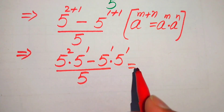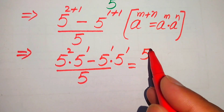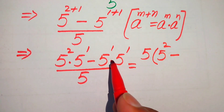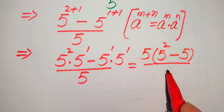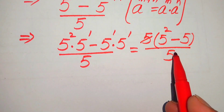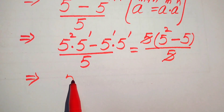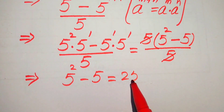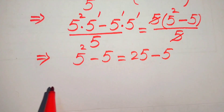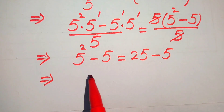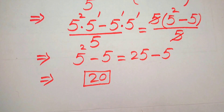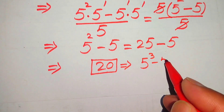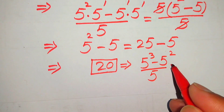In the next step, we take common factor 5 from the numerator. Taking out 5 from the first term gives 5 squared, and from the second term gives 5, all divided by 5. This 5 in the numerator is cancelled by the 5 in the denominator, leaving 5 squared minus 5. Since 5 squared is 25, we get 25 minus 5, which equals 20. So 5 cubed minus 5 squared divided by 5 equals 20.